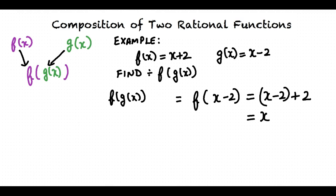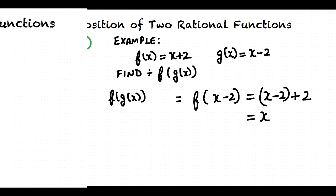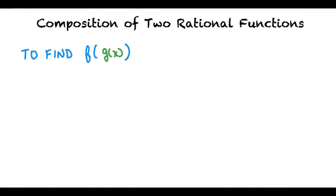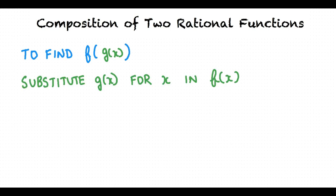That is correct. To summarize, in order to find the composition of two rational functions, say f of g of x, we substitute the function g of x for x in the f function.